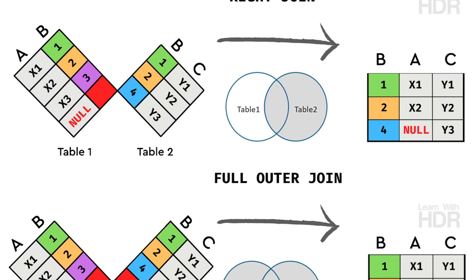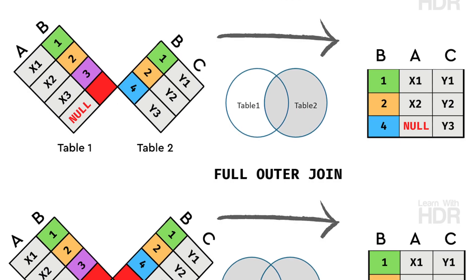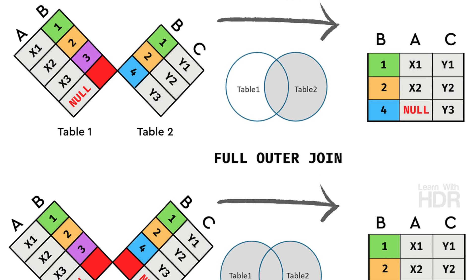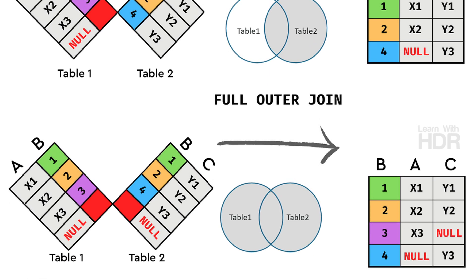Fourth, full join or full outer join. Table 1 and table 2 will have all the data — matched or unmatched. Table 1 and table 2 will have all the data matched and filled in.